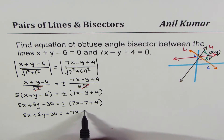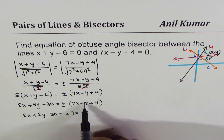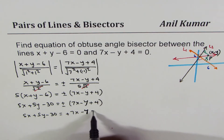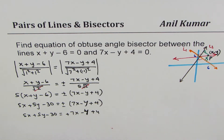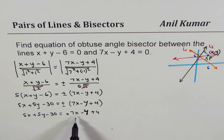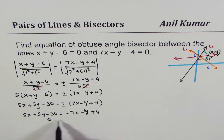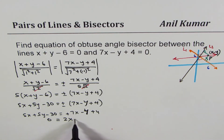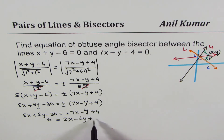Taking the positive sign: 5x plus 5y minus 30 equals 7x minus y plus 4. Bringing all terms to one side, 7x minus 5x gives 2x, and rearranging gives 0 equals 2x minus 6y plus 34. That is our first bisector equation.